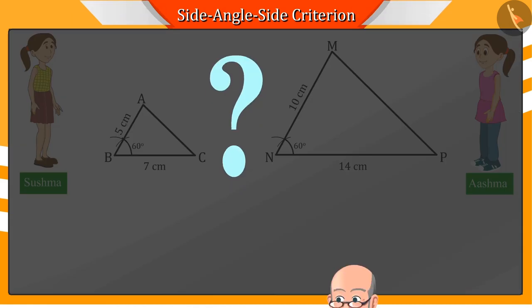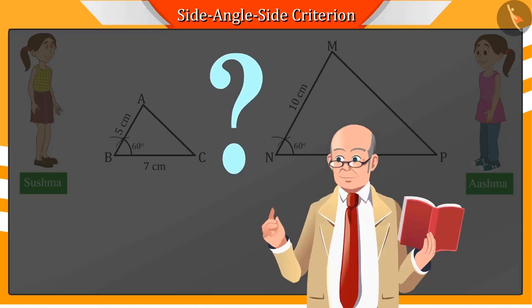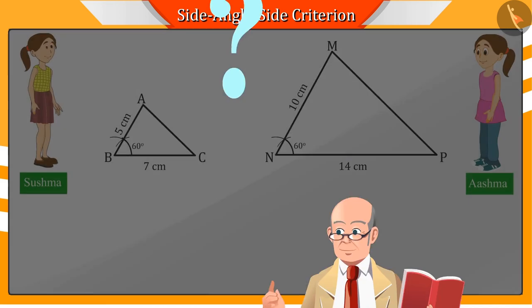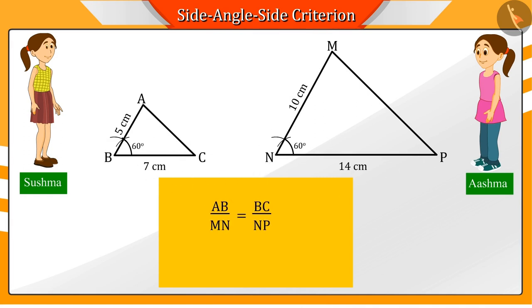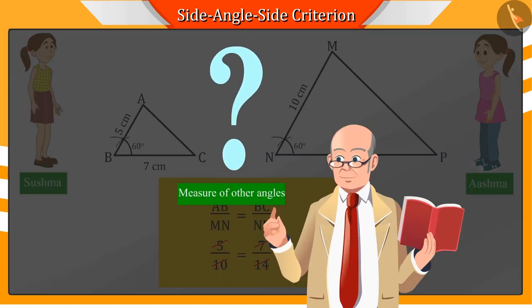After the triangles are made, the teacher asks them what do they see in these two triangles. Shushma says that the sides of the triangles are proportional. Correct. Now, the teacher asks them about the measurement of other angles.